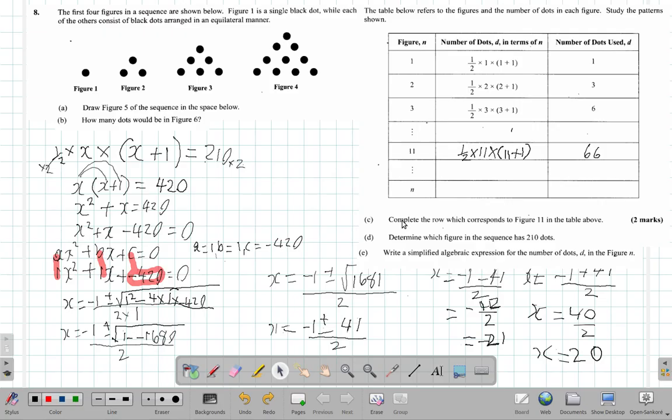All right, now we're ready to look at part E of question 8. It says write a simplified algebraic expression for the number of dots D in figure n. We're going to need space, so let's get rid of these writings and rough work here.